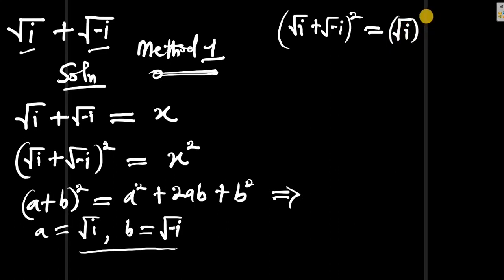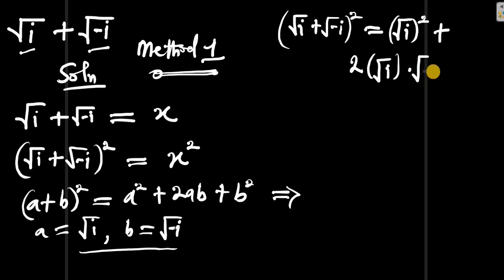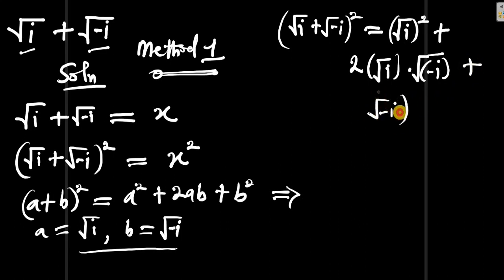(√i)² + 2·√i·√(-i) + (√(-i))². The squared terms cancel their respective square roots, and this expression equals x².